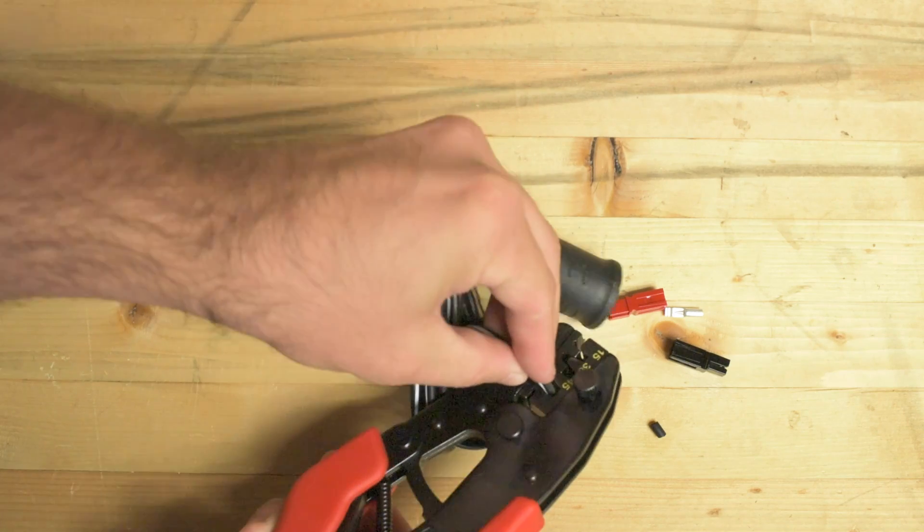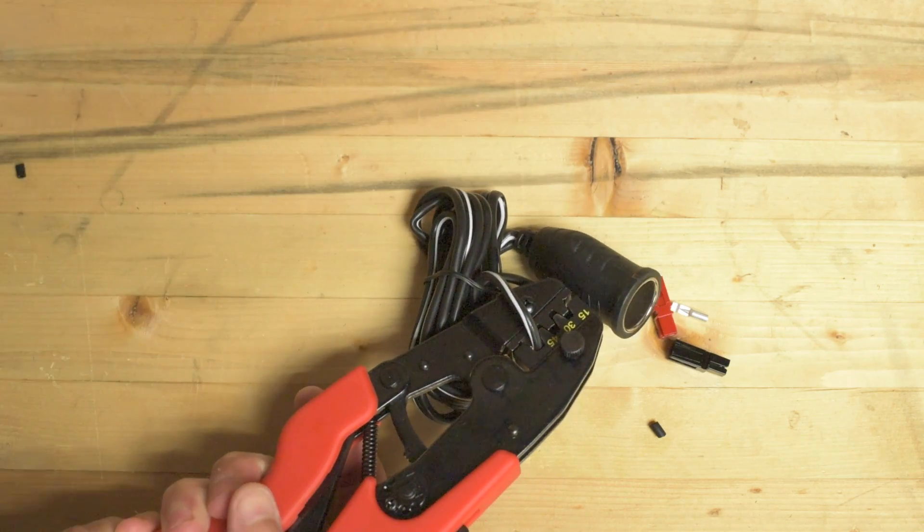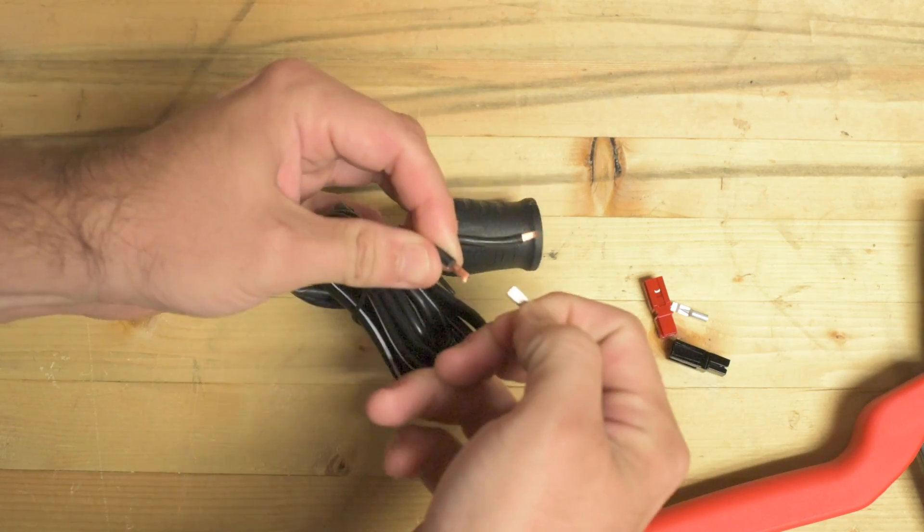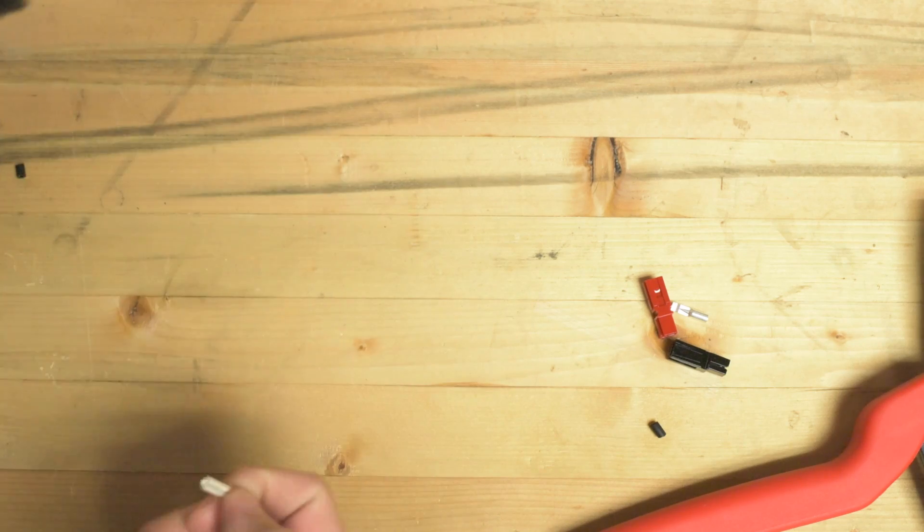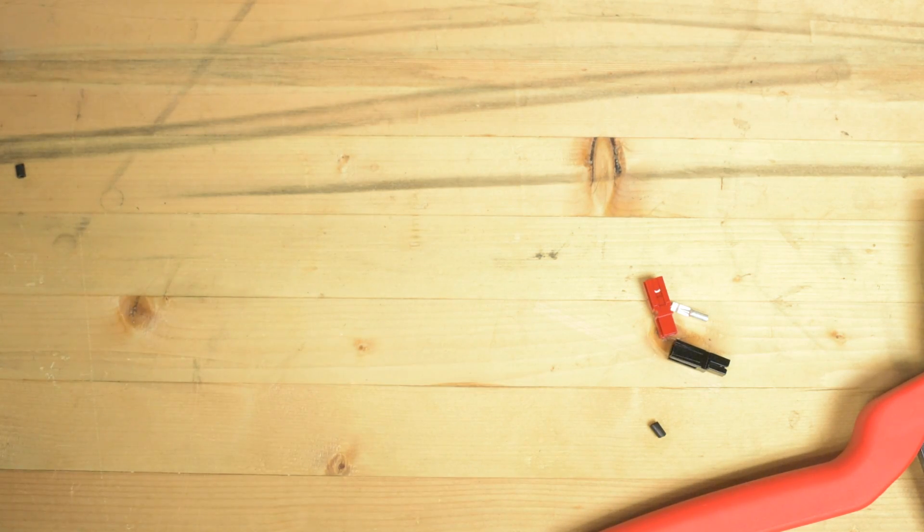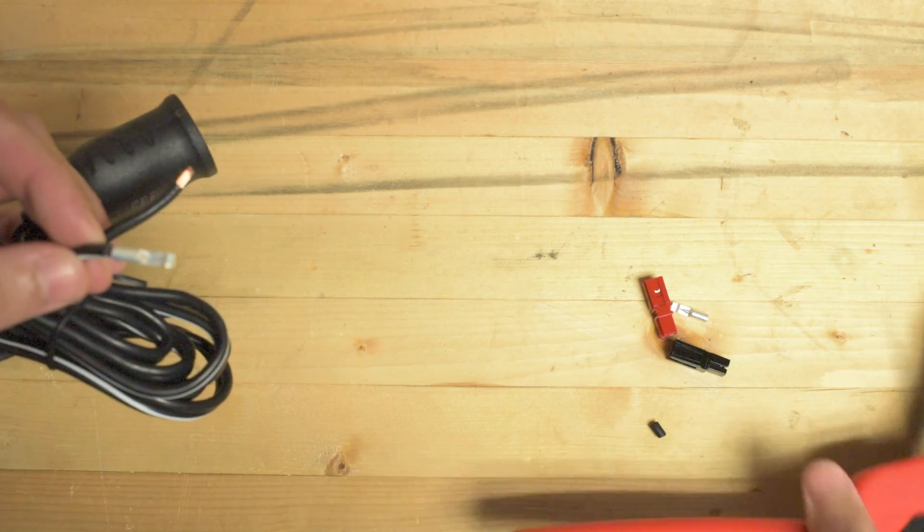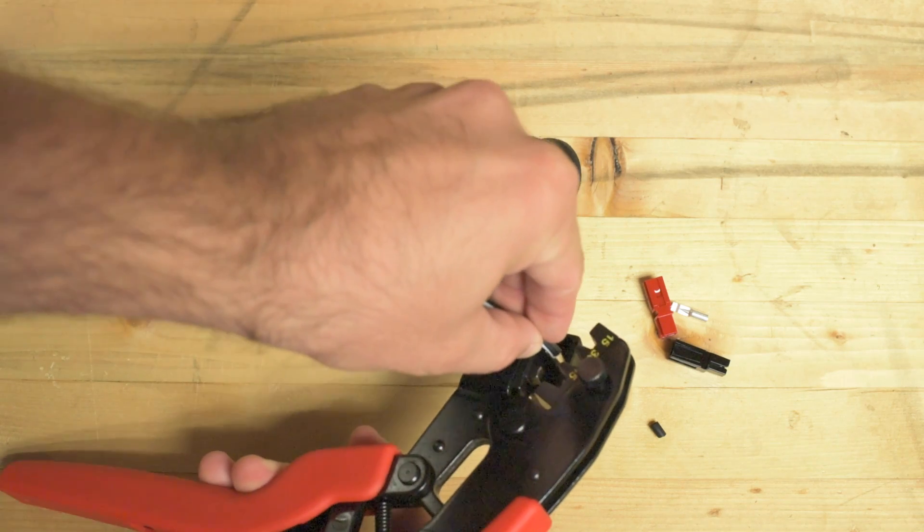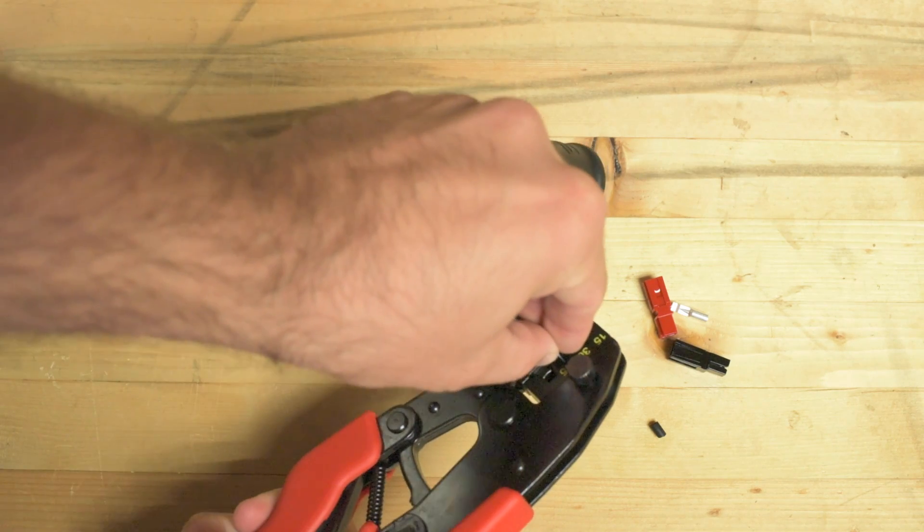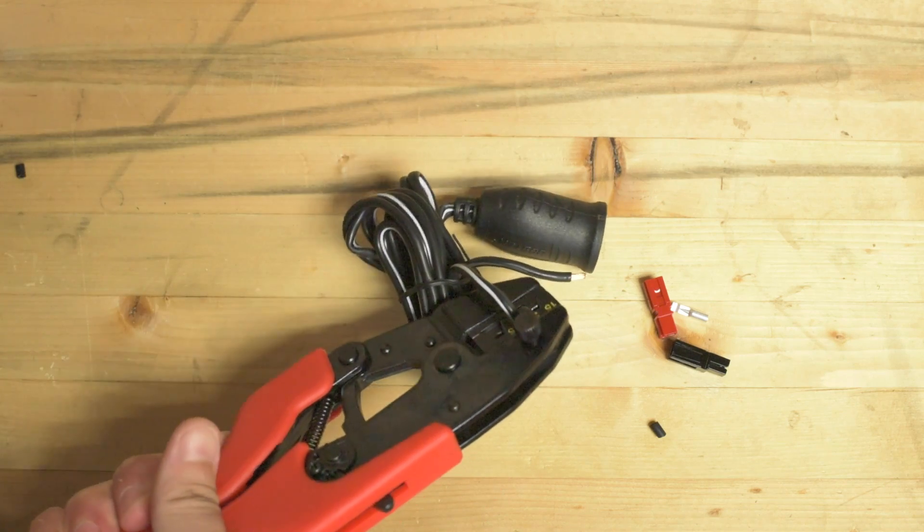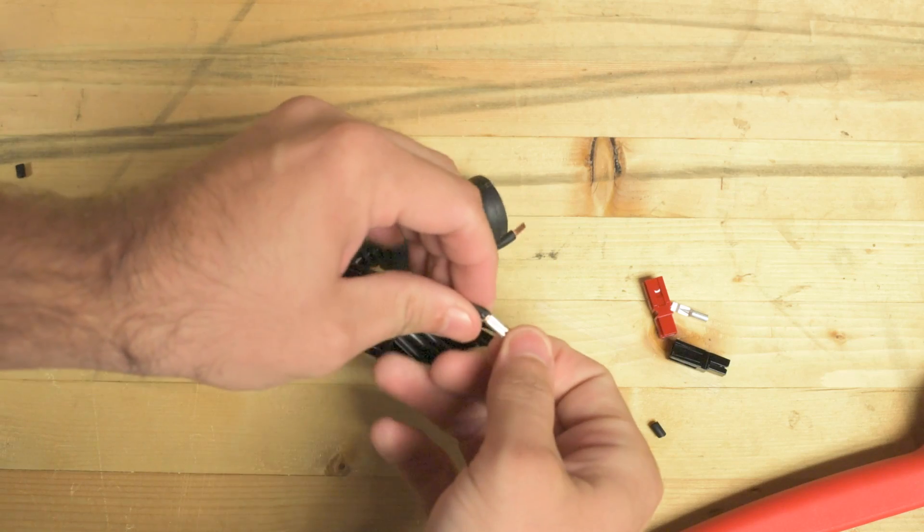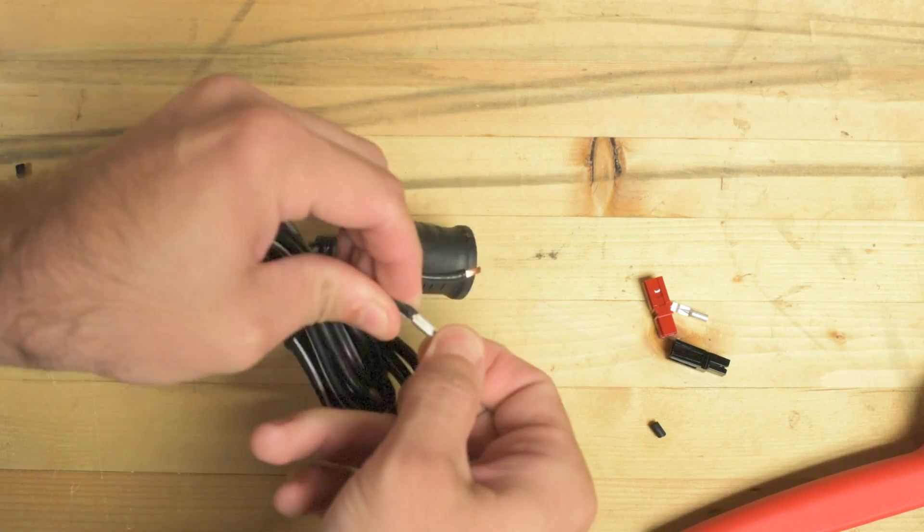I think the doohickey just goes in there and then you just crimp down on it. Let's see if that worked. No, not a very tight fit, let's try that again. We'll try the 30 this time. So I'm just sliding that into the slot and then... okay, that's a nice fit. That's good.